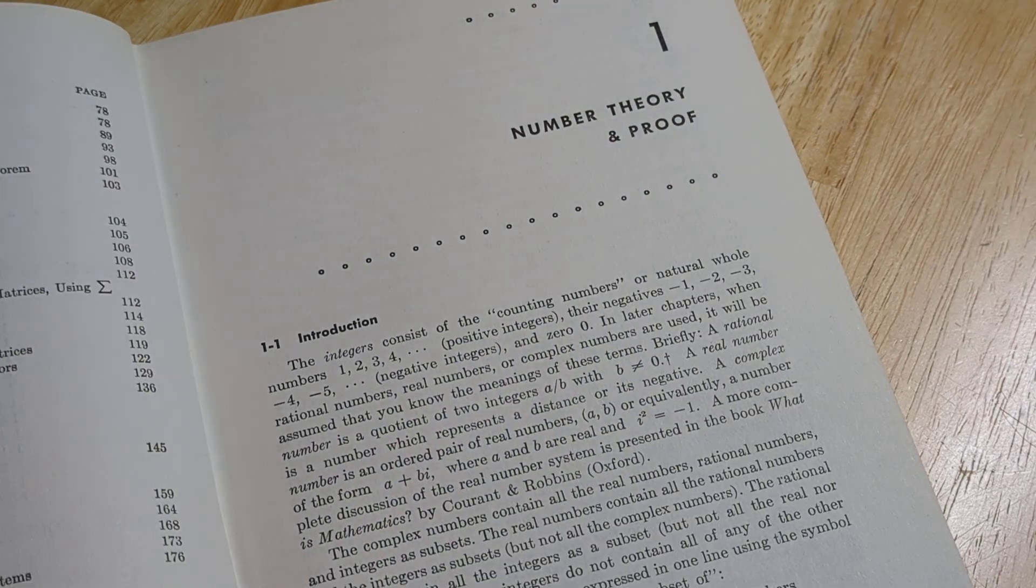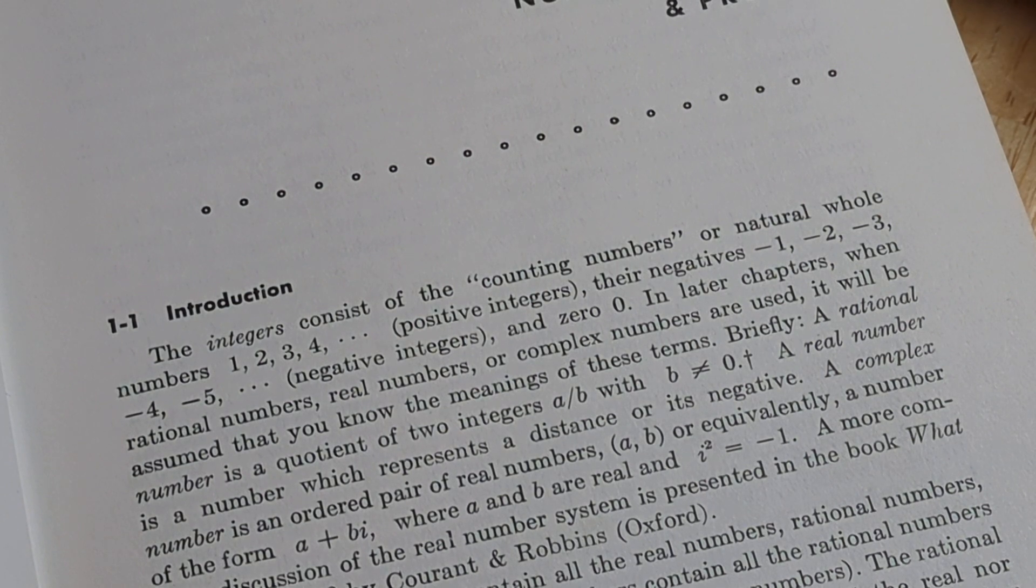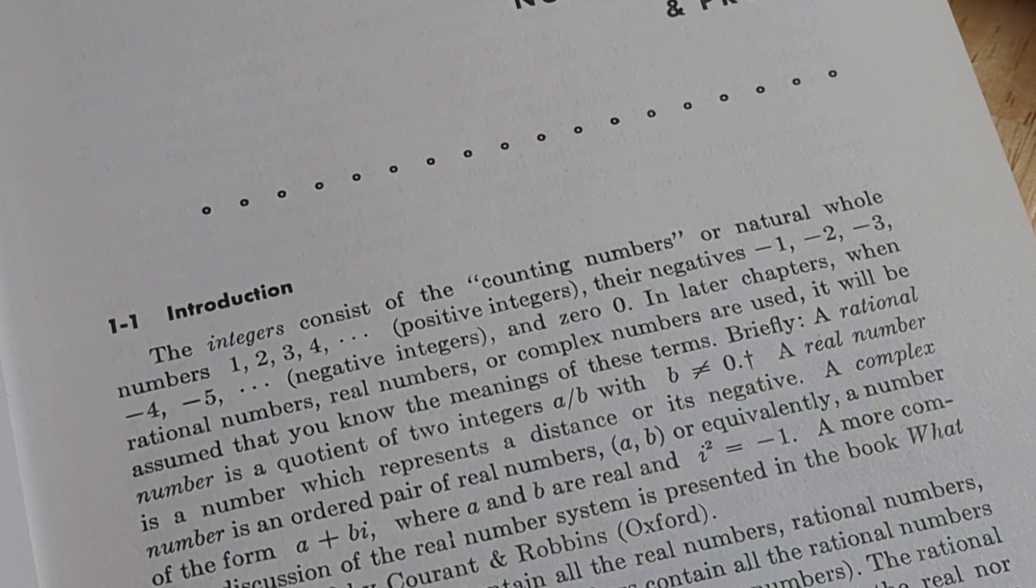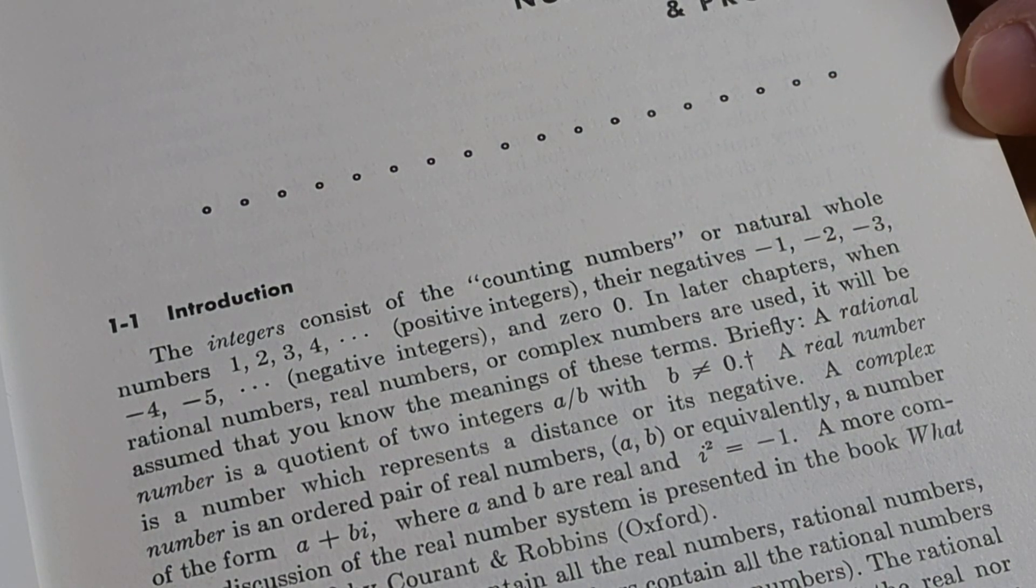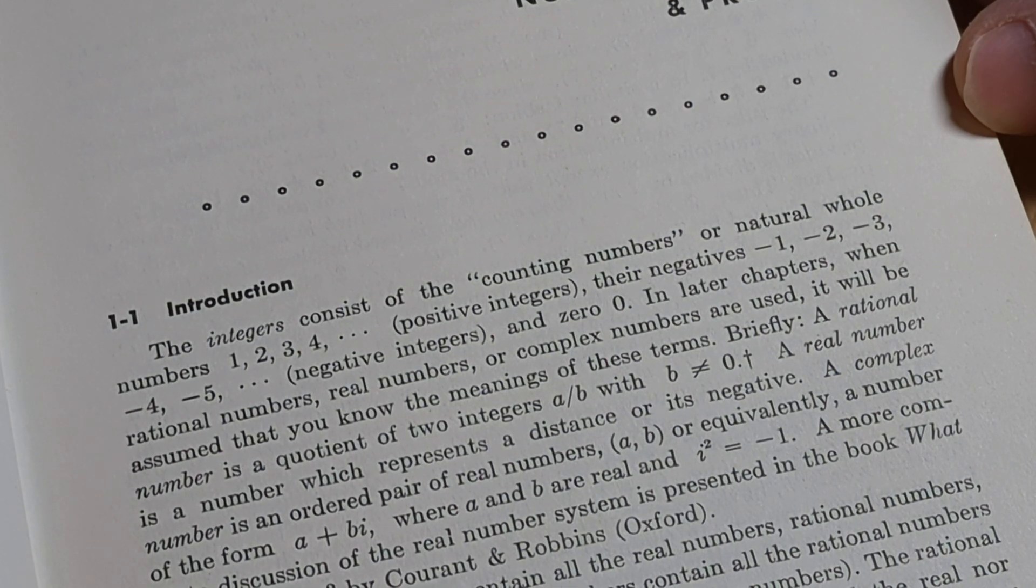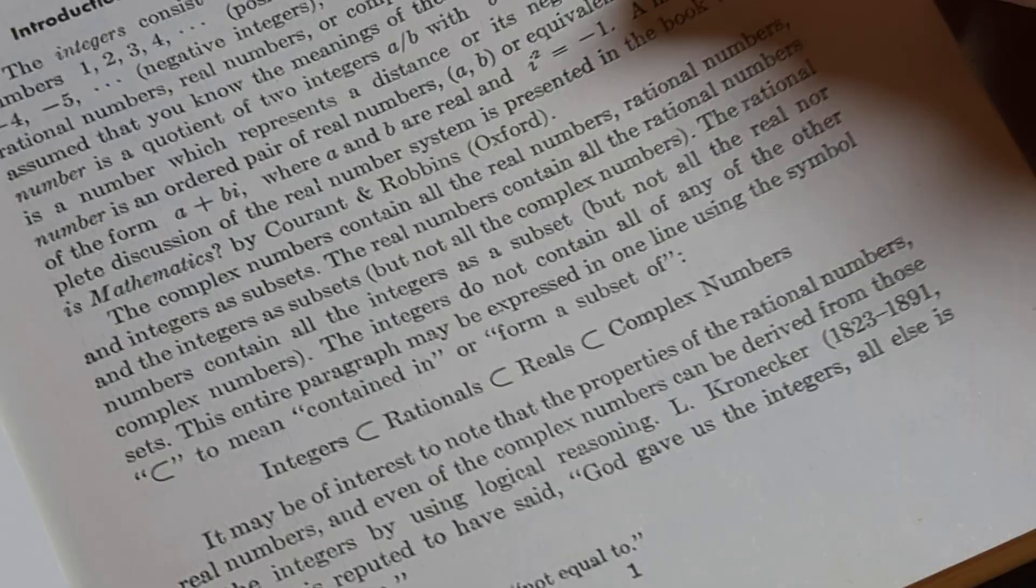Here's where it starts. Let's see what it says. Introduction: The integers consist of the counting numbers or natural whole numbers—one, two, three, four—positive integers, their negatives, or zero. In later chapters when rational numbers, real numbers, or complex numbers are used, it will be assumed that you know the meanings of these terms.